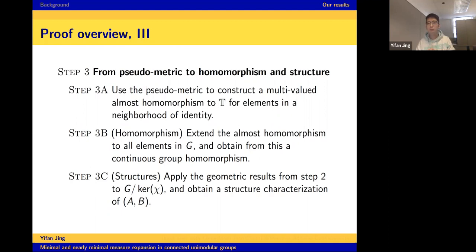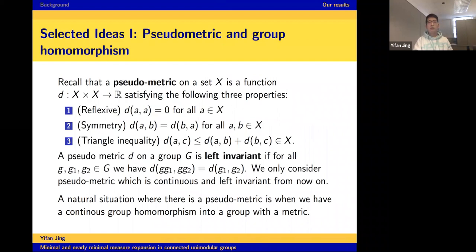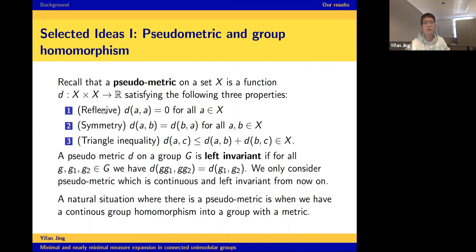Now I'll present a new proof of Kemperman's inequality. In the paper we obtain several new proofs, each giving structural results when equality holds. We assume we already have a subgroup H such that A intersects all cosets of H in sets of small measure, and similarly for B. This condition is hard to obtain in general, but assume we have it. We want to prove that all fibers of A — that is, A intersected with each coset of H — have the same length.